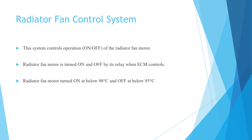The radiator fan control system controls the on or off operation of the radiator fan motor. The radiator fan motor is turned on and off by its relay when the ECM controls it. The radiator fan motor turns on when the temperature is at or above 98 degrees Celsius and turns off when the temperature drops below 93 degrees Celsius.